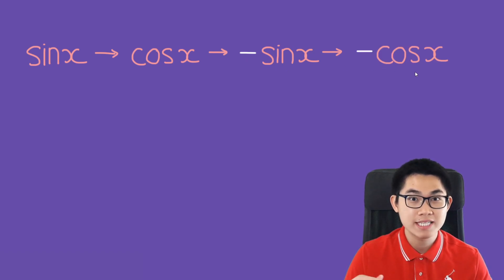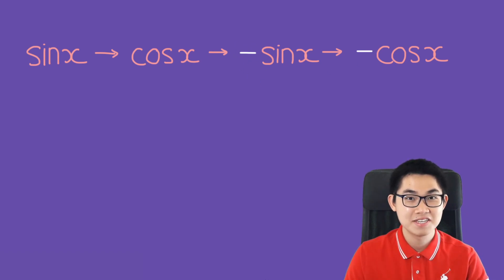So basically it's a sequence that alternates between sine and cosine, and there are two negative signs here. So what does this tell us? Let's start with the derivative of sine of x. According to the arrow, it's going to be cosine of x.